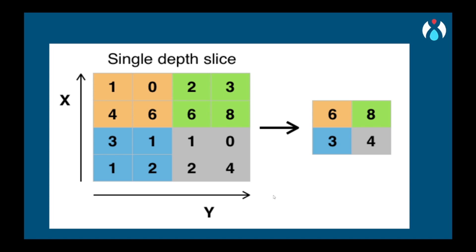Let us first see this Extra Trees Classifier diagrammatically. Considering each color as a tree, these are certain branches of the tree yielding results 1046, 2368, 3112 and 1024.